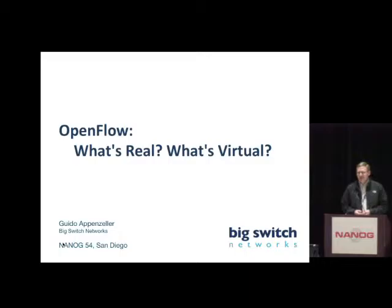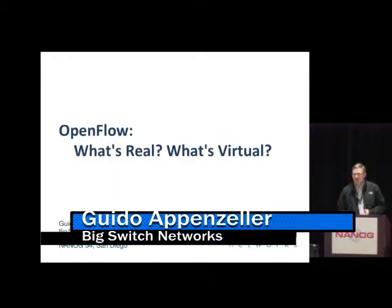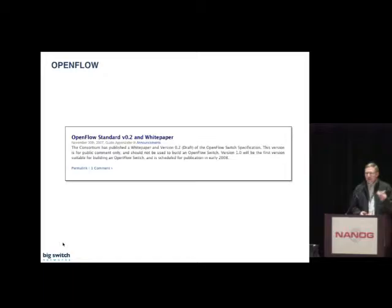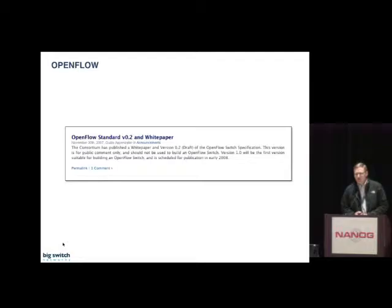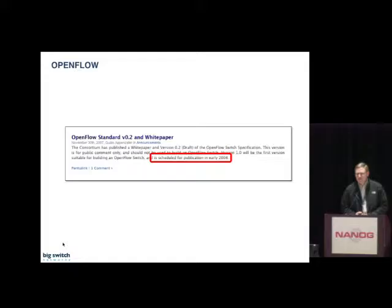I'm going to put together my slides trying to answer the question: what's real and what's virtual about OpenFlow? The first thing I did was go back and ask when did we start this whole thing. If you look at the OpenFlow website, the first draft of the OpenFlow spec was actually published in November 2007, with a footnote saying the final spec is expected for early 2008. The actual OpenFlow 1.0 spec was published December 31st, 2009 — almost early 2010 — so about two years late.